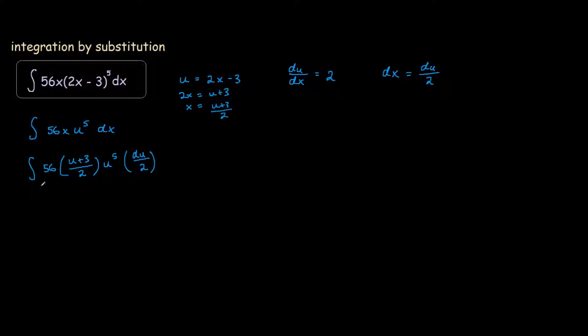So if we simplify everything here, we have 56 times 1.5 times 1.5 is 14. And that is outside of u plus 3, u to the cube du. And simplifying even further, we have u times u to the 5 is u to the 6 times 14. So we have 14u to the power 6. 14 times 3 is 52. So we have plus 52 times u to the power 5 du.